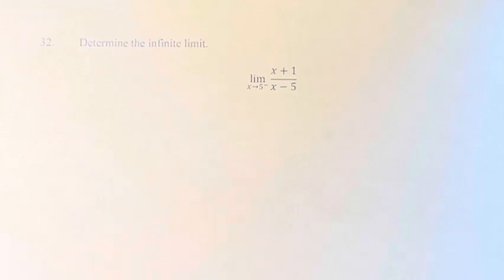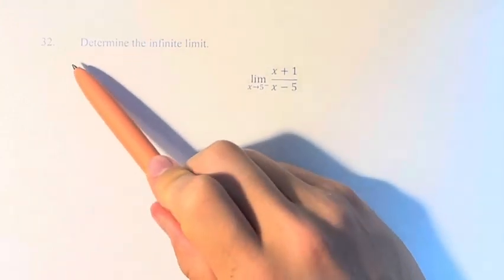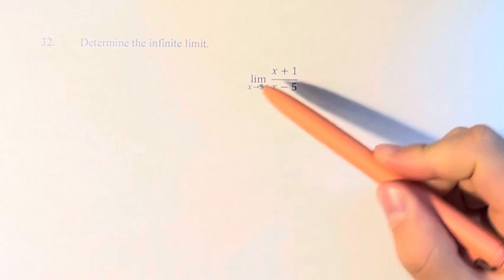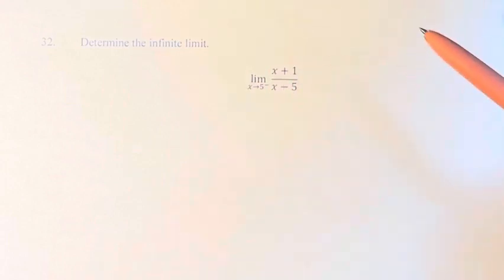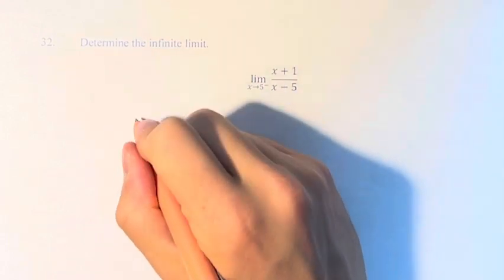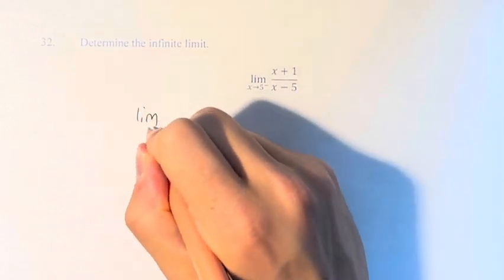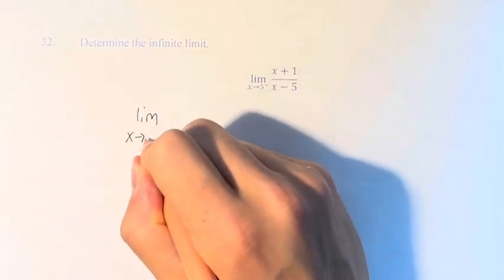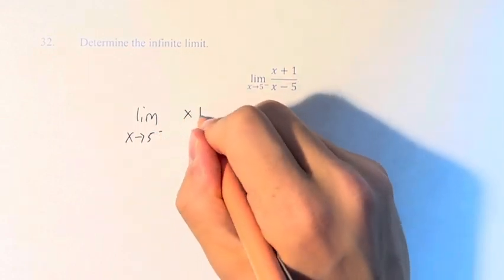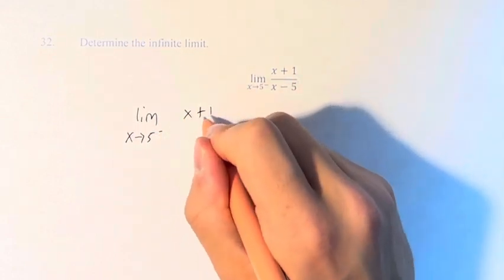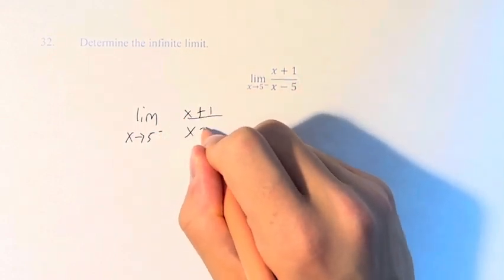Hello, and welcome back to another video. In this problem, we're asked to determine the infinite limit — the limit as x approaches 5 from the left of (x + 1) over (x − 5).